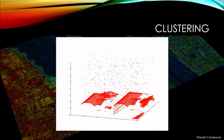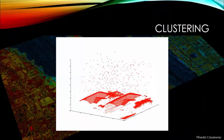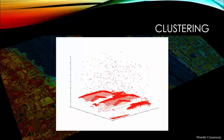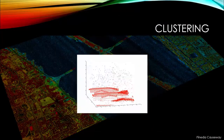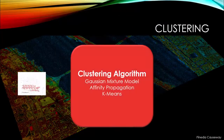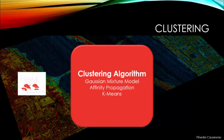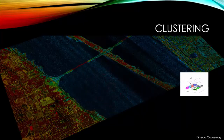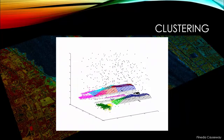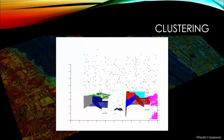In the clustering step, we took raw point cloud data, represented by the red data points, and grouped it using a clustering algorithm such as Gaussian mixture model expectation maximization, affinity propagation, or k-means. In this step, we want the clusters to define the target object as much as possible.